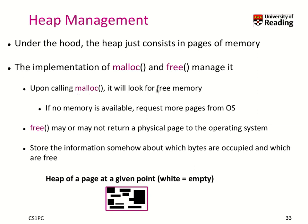When you call malloc, the system looks for free memory, and if no memory is available in the process, it requests more pages from the operating system. When you call free, it may or may not return a physical page to the operating system, but certainly that memory should not be used anymore by the programmer. These functions manage which bytes are occupied and which are free. At any given point the heap may have some bytes occupied — indicated by the black boxes — and some bytes unallocated and free. Every time you free a block it becomes reusable, and when you need new memory you find a free spot and allocate it again.